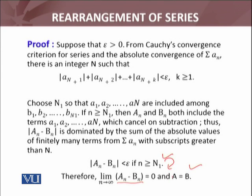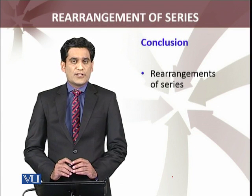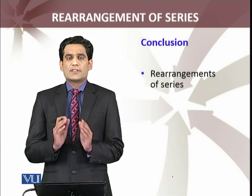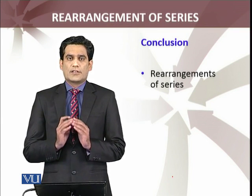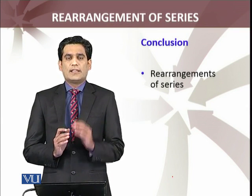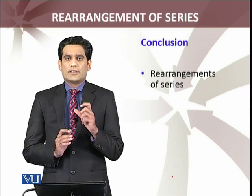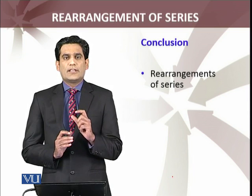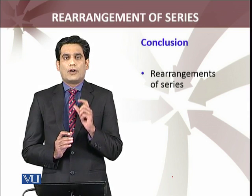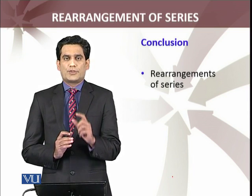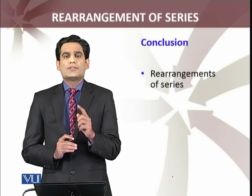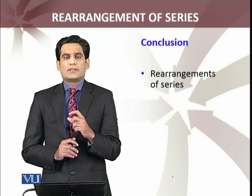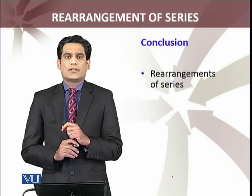Since the limit of A_n minus B_n equals zero, we have A equals B — which is what we had to prove. So we have discussed the rearrangement of the series. Rearrangement of any series can be considered, but if the original series is absolutely convergent, then the rearrangement will always be absolutely convergent and it converges to the same sum as the original parent series.